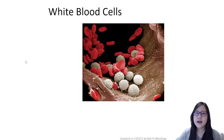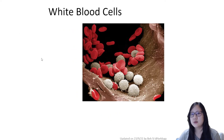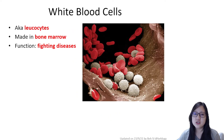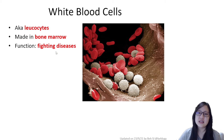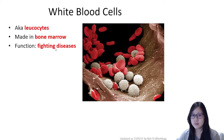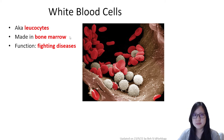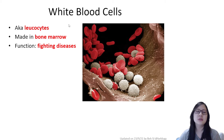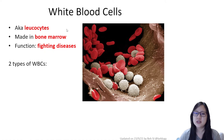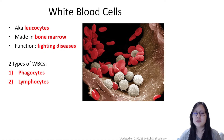Let's start with white blood cells. Their main function is the defense of the body — fighting diseases and pathogens. Another name for white blood cells is leukocytes. There are two types of white blood cells: phagocytes and lymphocytes.